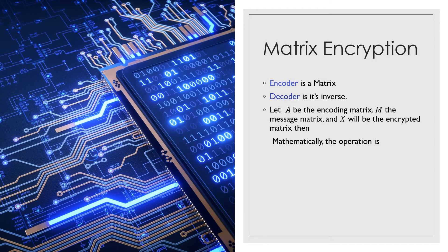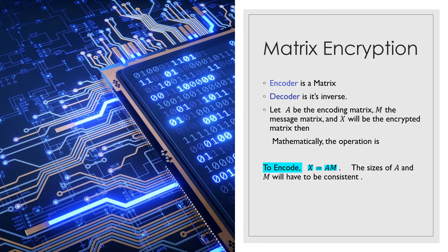For example, if A is the encoding matrix, M is the message matrix, and X is the encrypted matrix, then mathematically the encoding operation gives us: X is equal to the product of matrices A and M, where A is the encoding matrix and M is the message matrix.